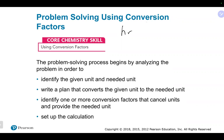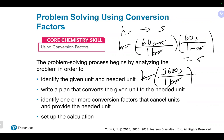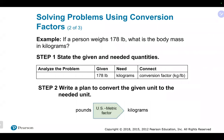For example, going from hours to seconds, you could go hours → 60 minutes → 60 seconds, canceling hours then minutes to get seconds. Or you could use the fact that there are 3600 seconds in one hour and go directly. Both should give the same answer. Similarly, going from grams to pounds, you might go grams → ounces → pounds, or grams directly to pounds.